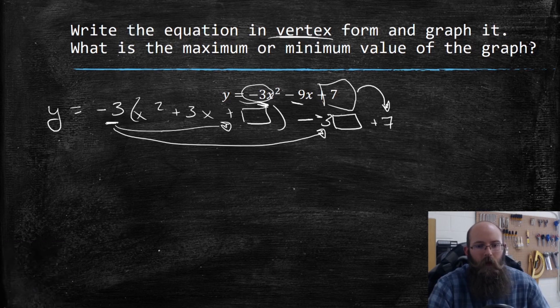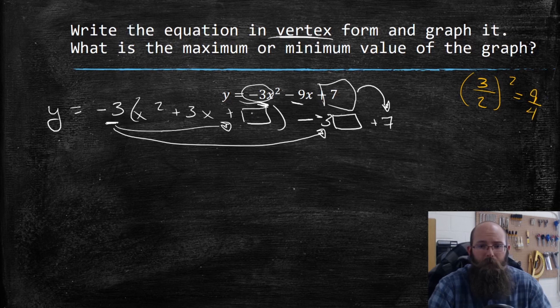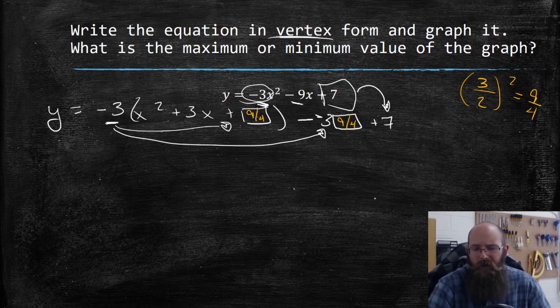Let me change colors. And let's figure out what goes inside this box. So it's going to be three, it's my B value divided by two, and then squared. Well, that ends up being nine over four, nine fourths in both of these spots. Don't be too afraid of the fractions. It's going to be okay. Real life has fractions a lot of the time.